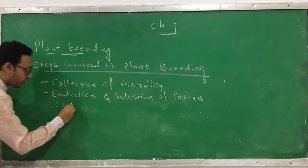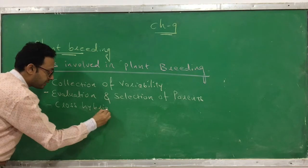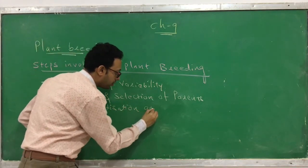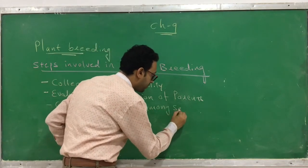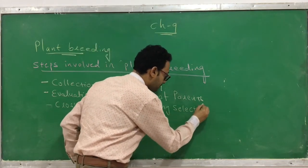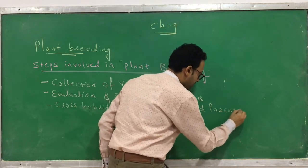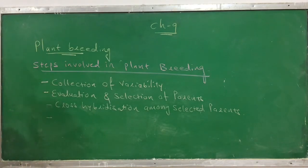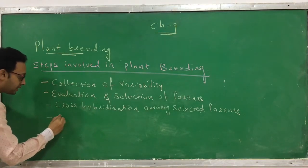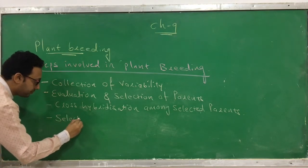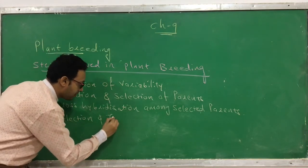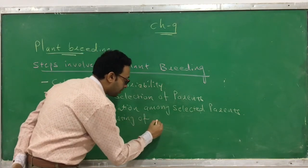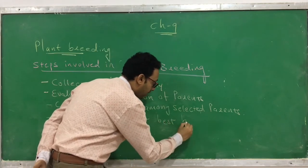The third step is cross-hybridization among selected parents. The fourth step is selection and testing of the superior hybrid.